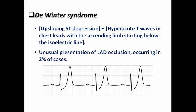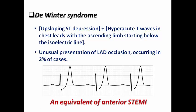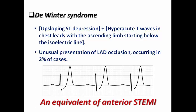Why do we combine these two ECG features under one terminology called De Winter syndrome? Because this pattern is an unusual presentation of LAD occlusion, indicating total LAD occlusion occurring in about 2% of LAD occlusion cases. De Winter syndrome is an equivalent of anterior STEMI — it is not a non-ST-elevation acute coronary syndrome simply because ST elevation is absent. It is a morphological variant of anterior STEMI, and coronary angiography will reveal total LAD occlusion. These patients typically present to the ER with typical chest pain and are high-risk.